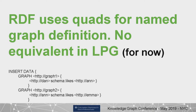Finally, while we've been talking about RDF triples, most RDF stores actually handle quads. That makes it possible to define subgraphs — named graphs — and add metadata to the triple, such as provenance. That's something you can't currently do in the property graph, although there's some work going on with the modeling and query languages working group.